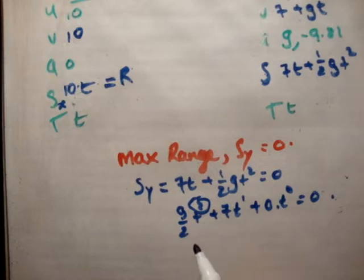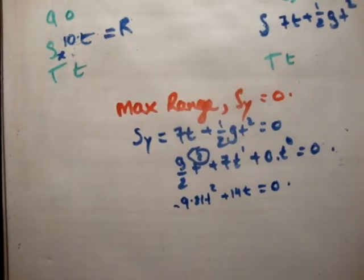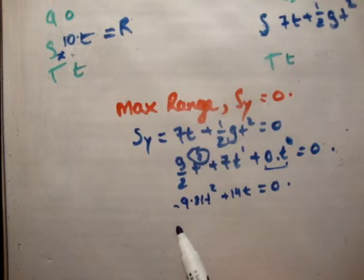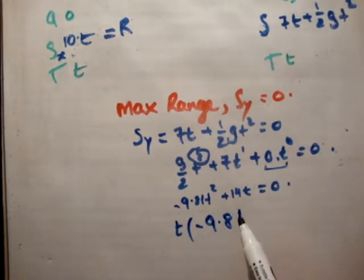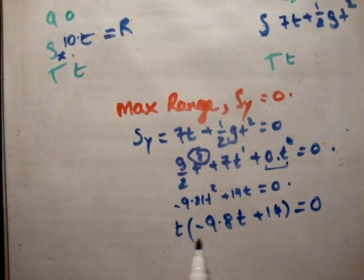So let's rearrange the quadratic. We get minus 9.81t squared plus 14t is equal to 0. Now, instead of using the formula as normal, because t to the 0 is multiplied by a coefficient of 0, I'm just going to take out t. So we have t times negative 9.81t plus 14 is equal to 0. Where you have two things multiplied together to get 0, one of them must be 0.